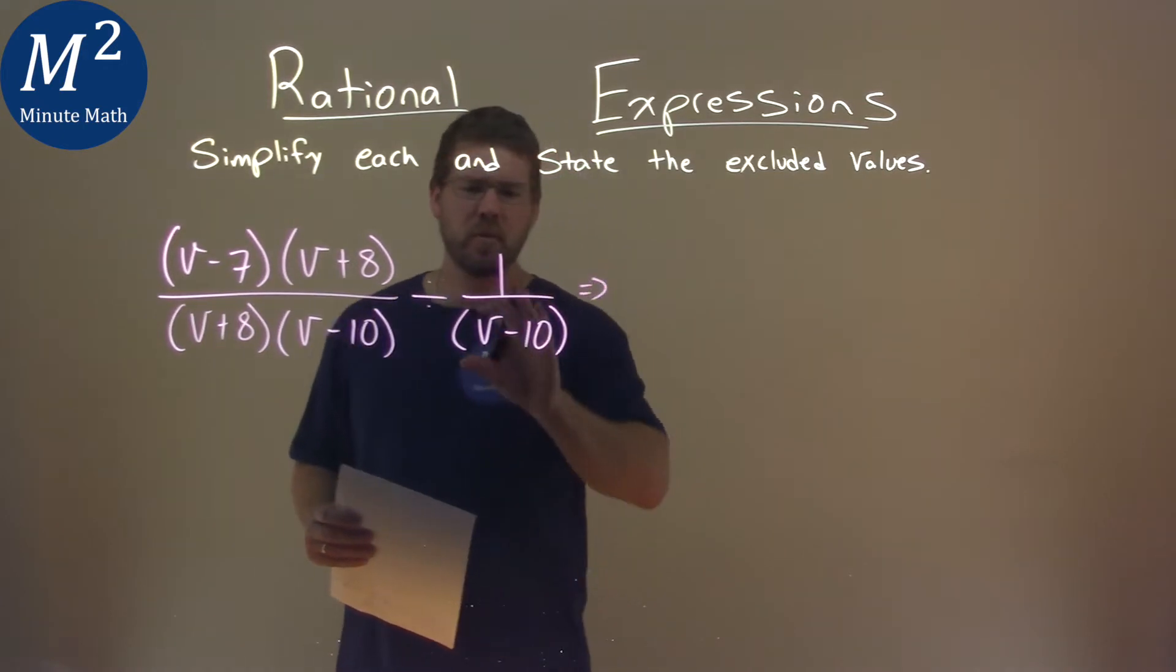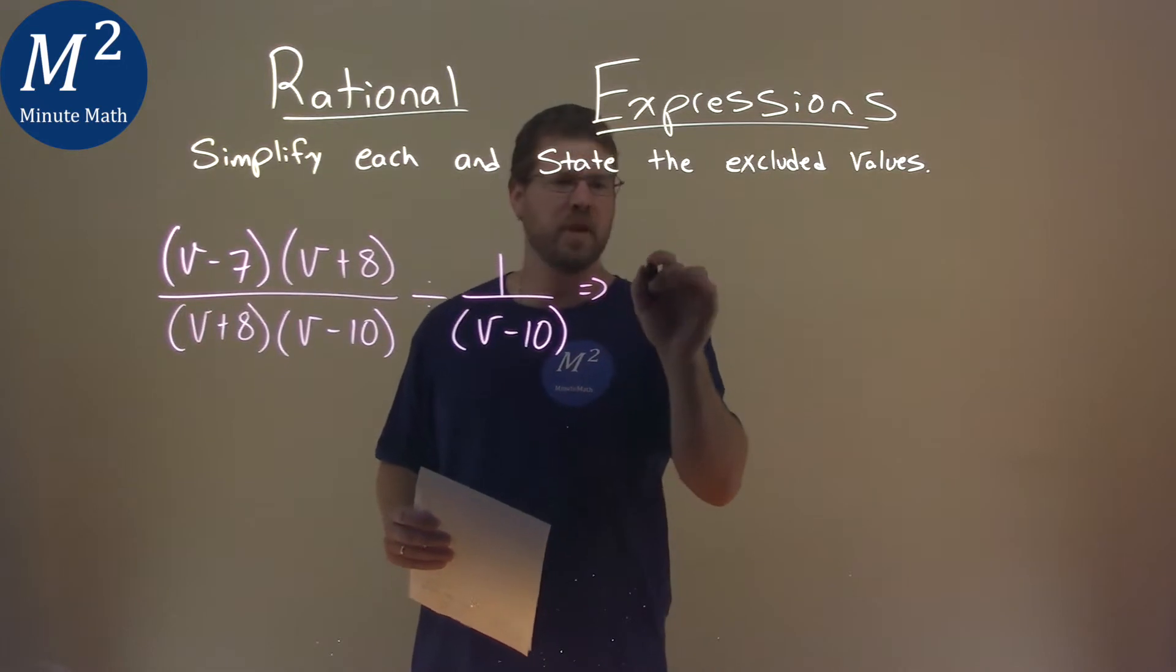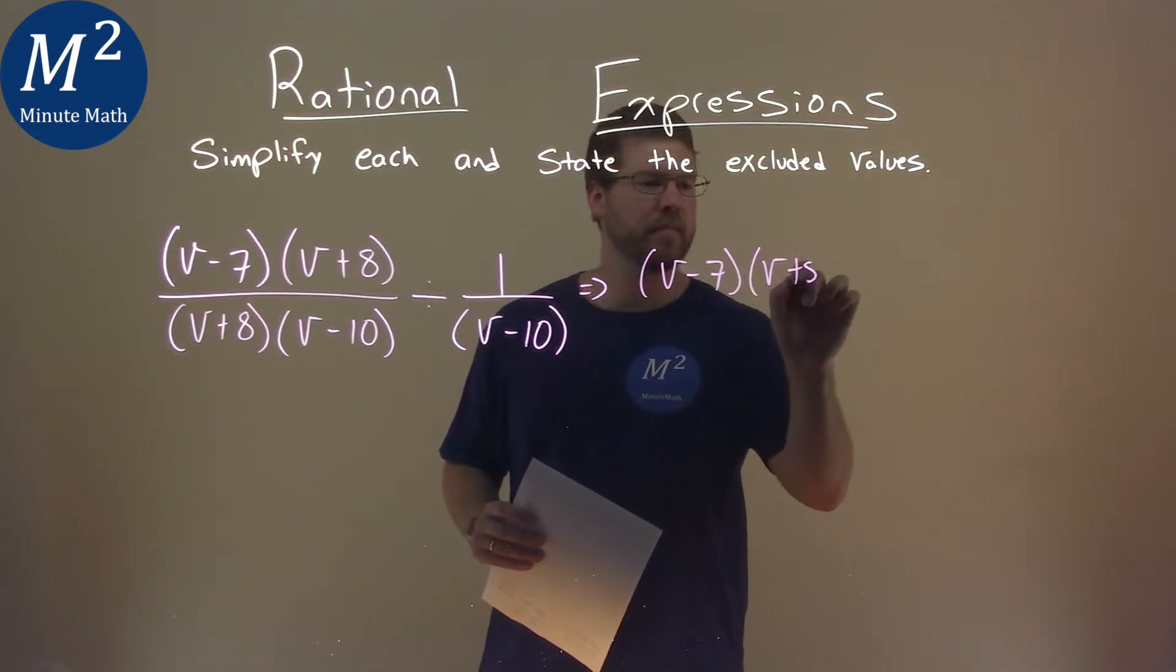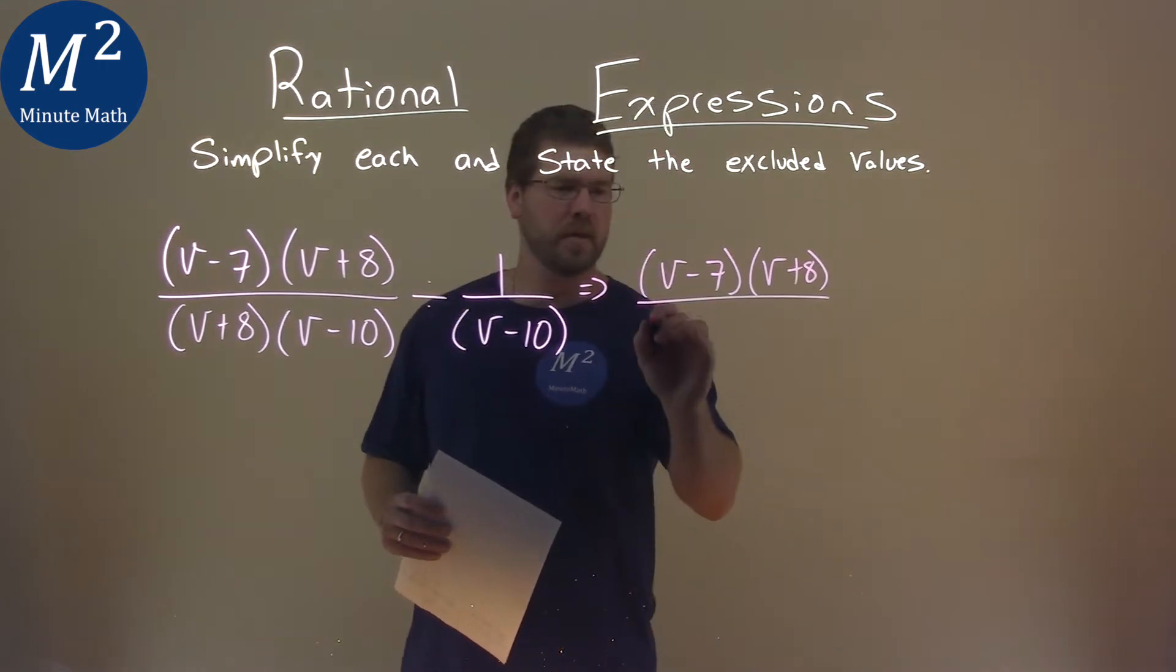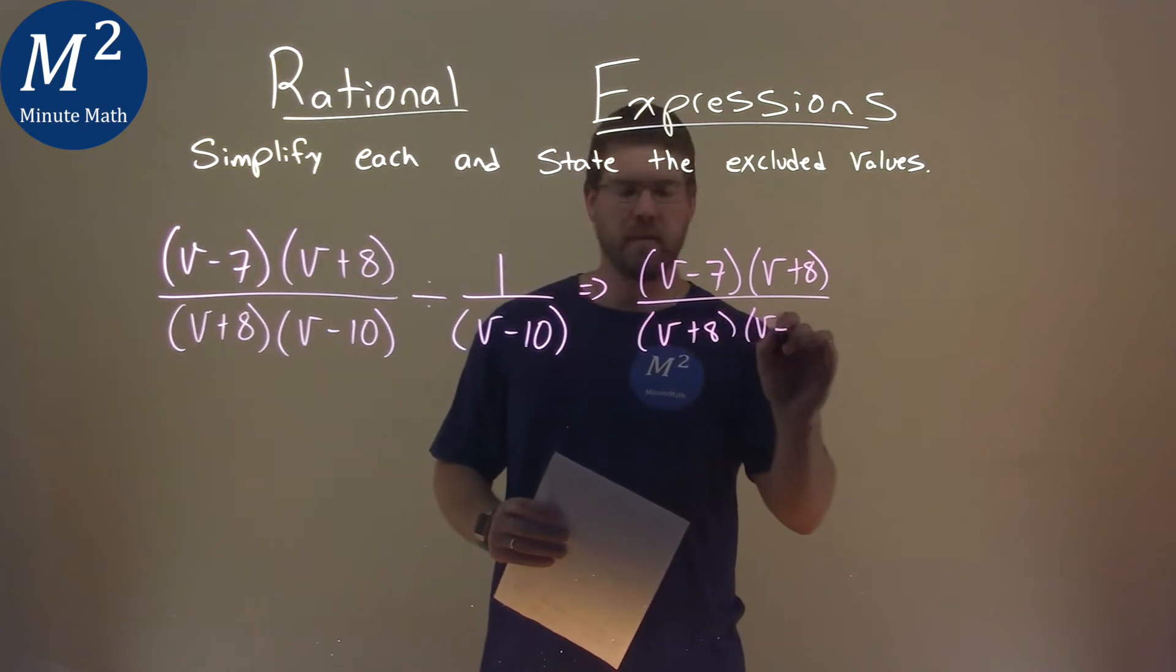Well, first thing here, I don't like writing division with a fraction, let's make this a multiplication. So we keep the v minus 7 and the v plus 8 here over, again, that v plus 8, bringing all that over from right here, and the v minus 10.